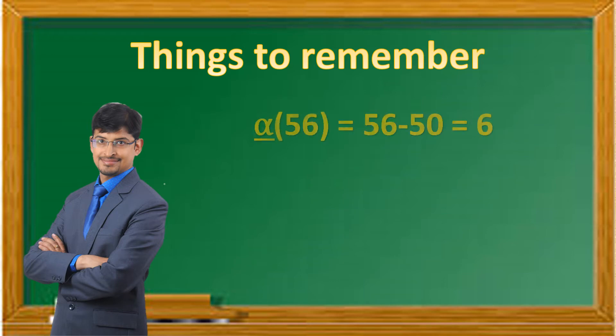For example, the alpha of 56 will be 56 minus 50, or 6, and the alpha of 67 will therefore be 17.